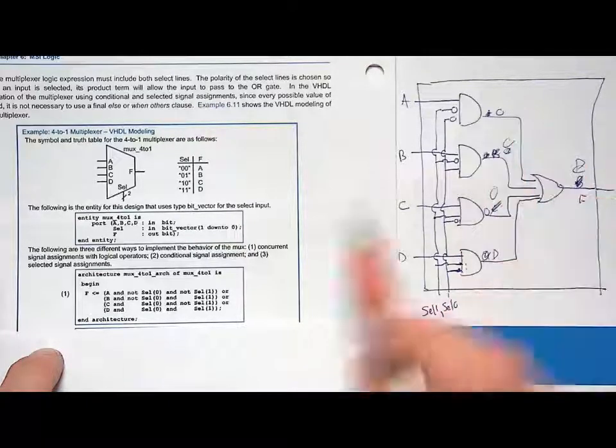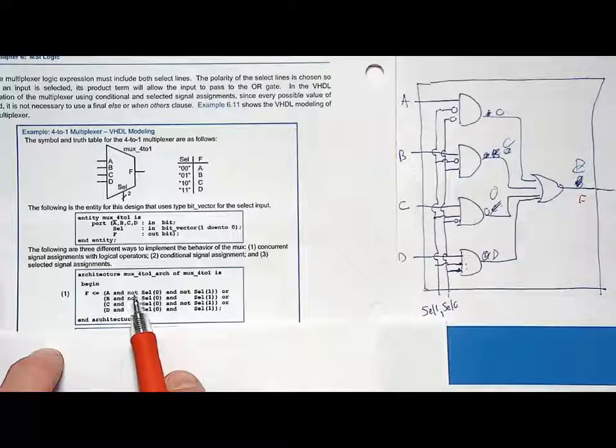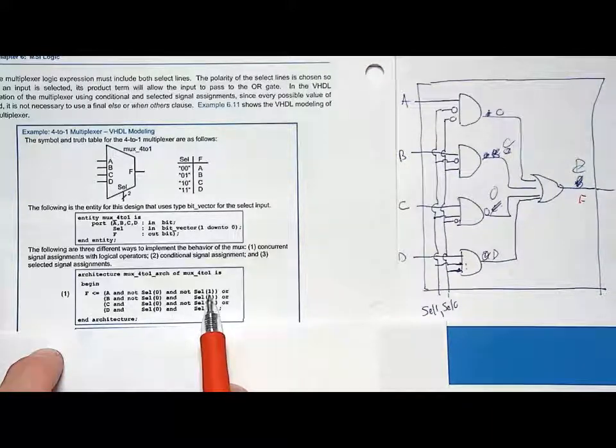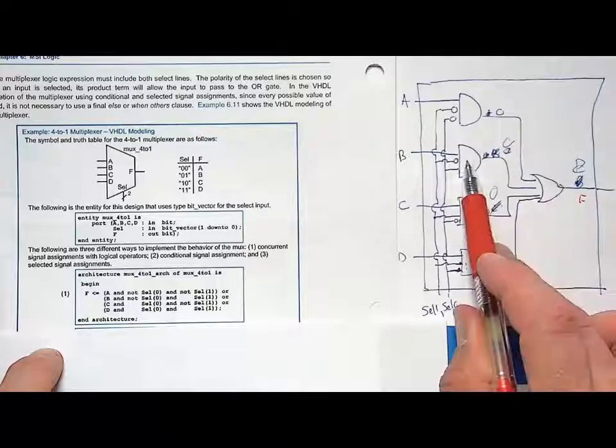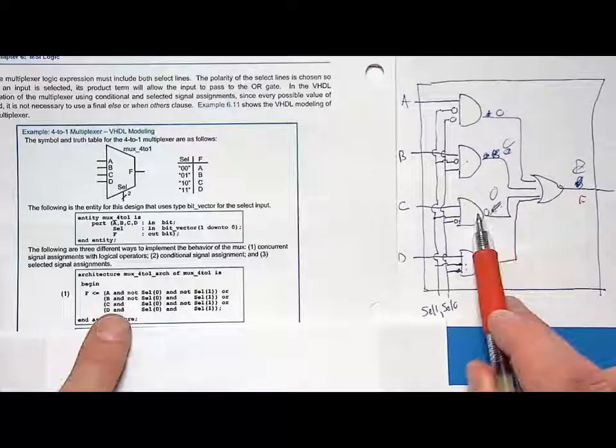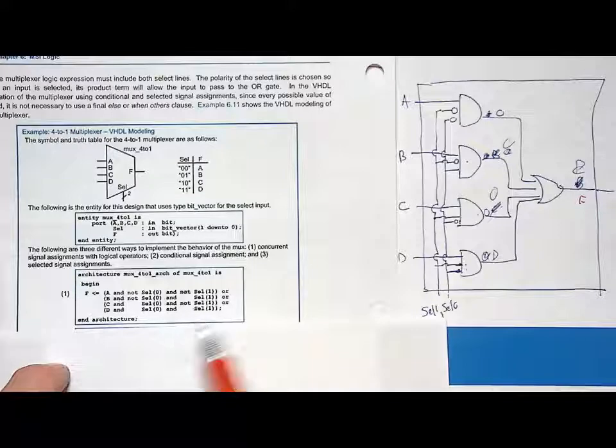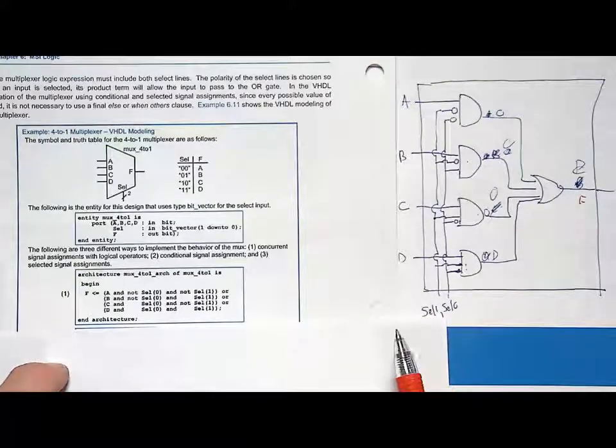So that's A and with not select zero and not select one. Then I do an or, and that represents or'd with this product term, or'd with this product term, or'd with this product term. This is how you can implement this directly with concurrent signal assignments and logical operators.